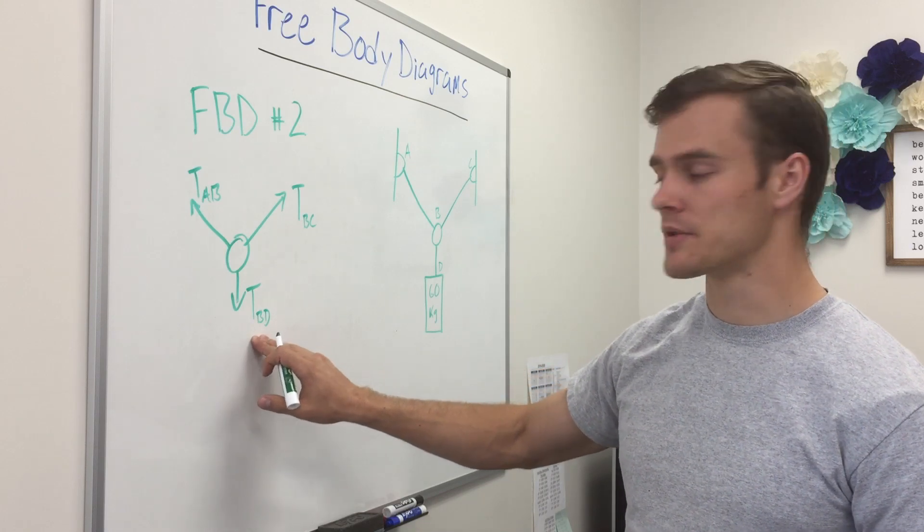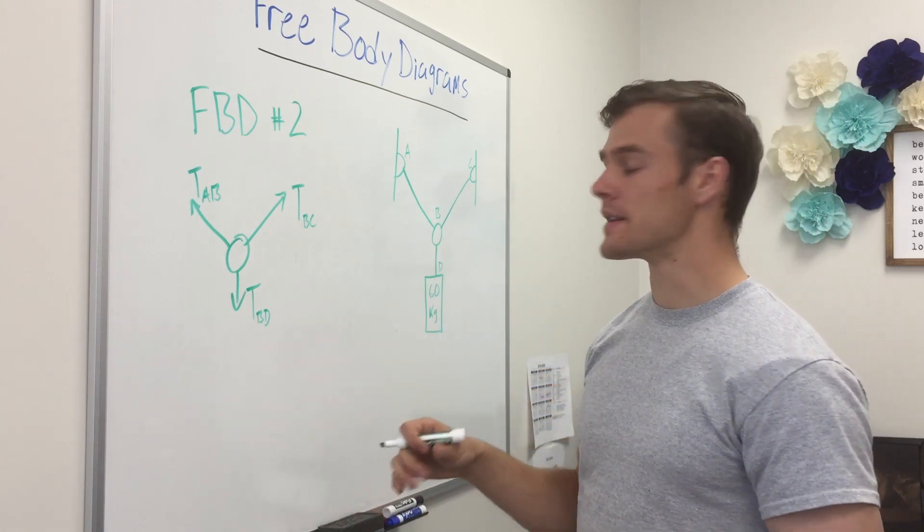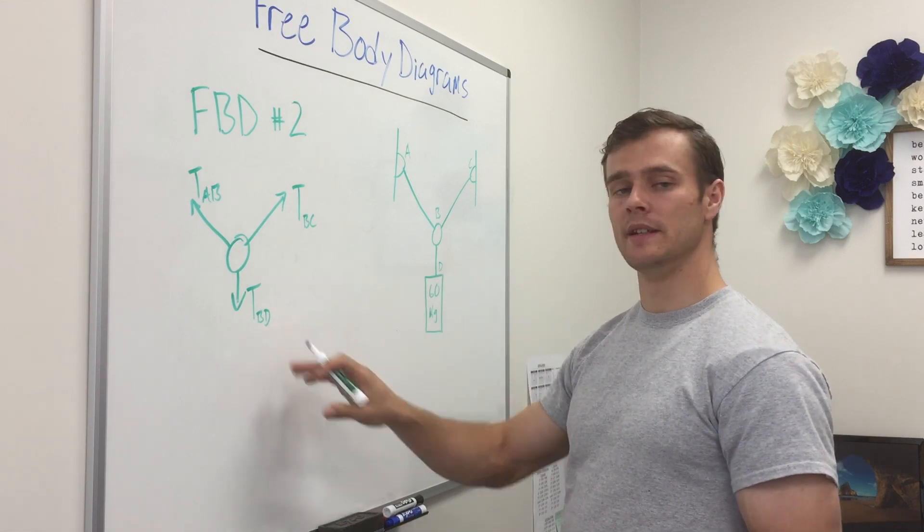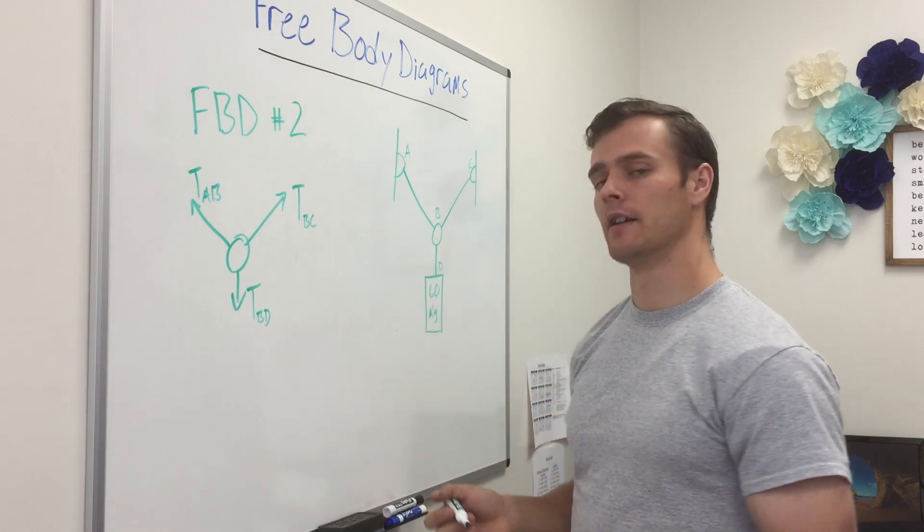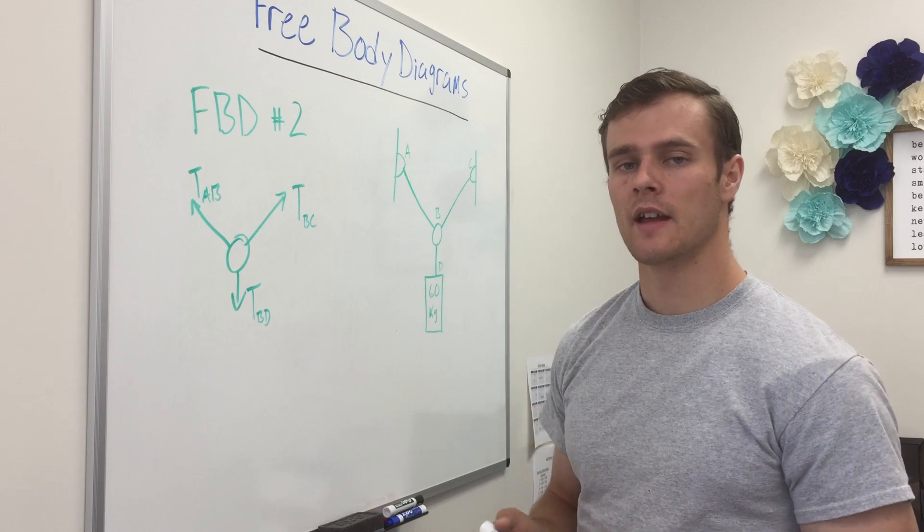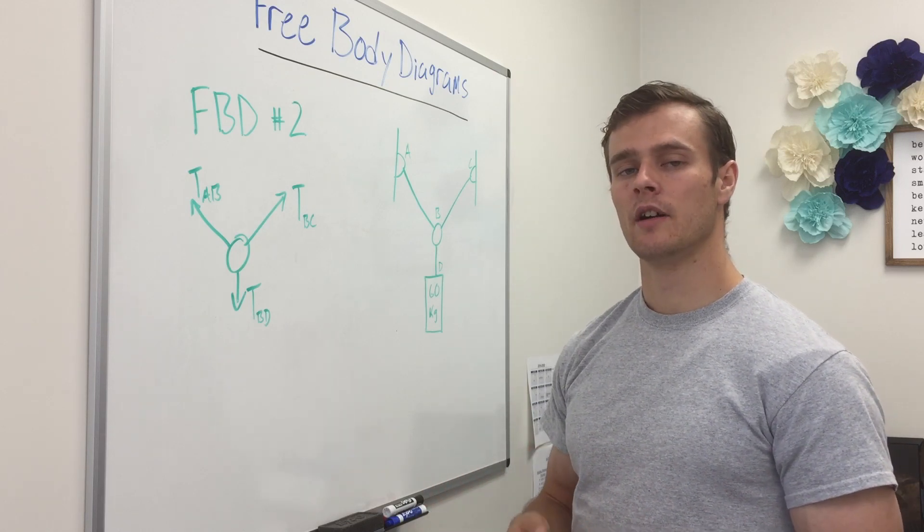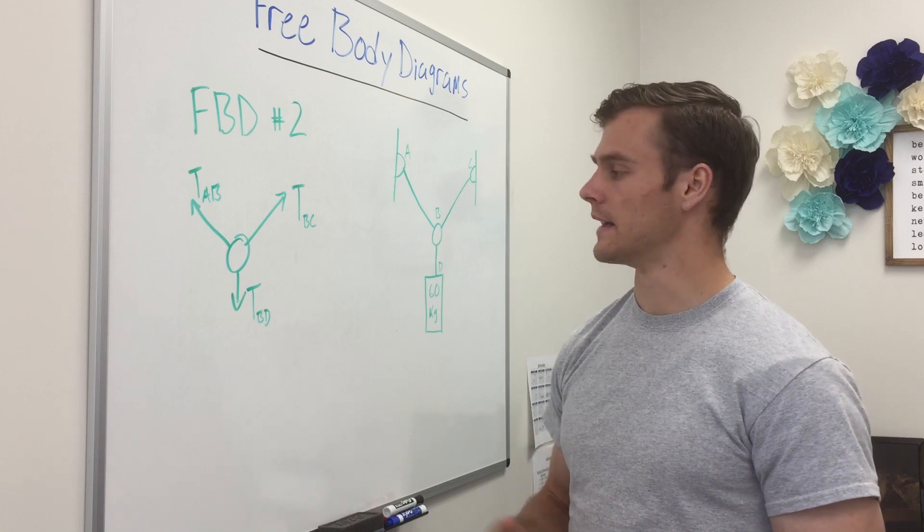And you can see that the tension in BD or the variable representing that tension will be the same as our tension BD in our other free body diagram of the cylinder. And so we can use that later to solve for what that force would be inside that rope.